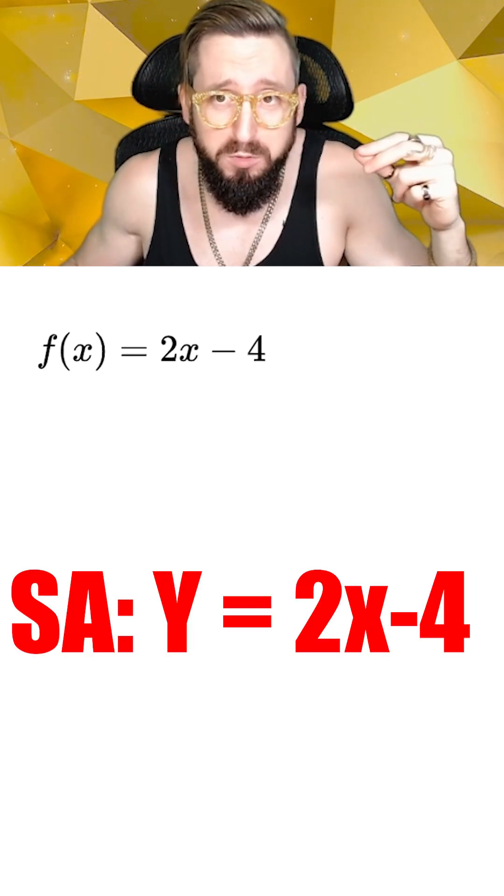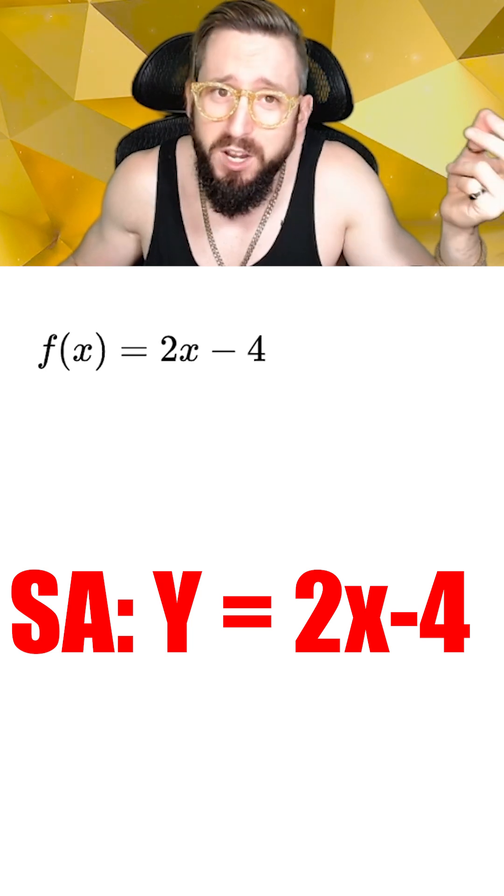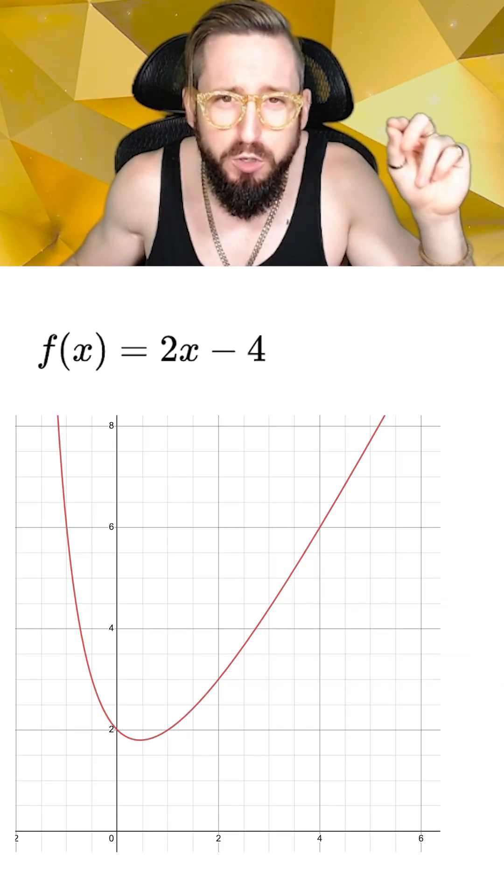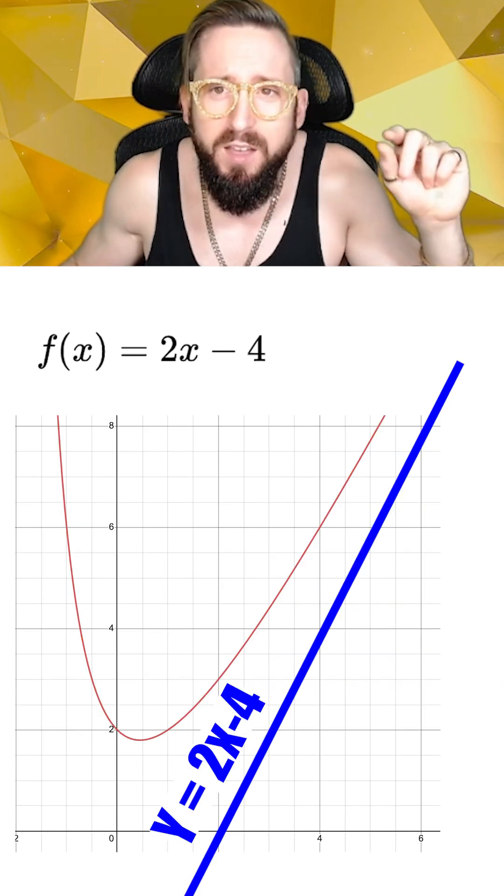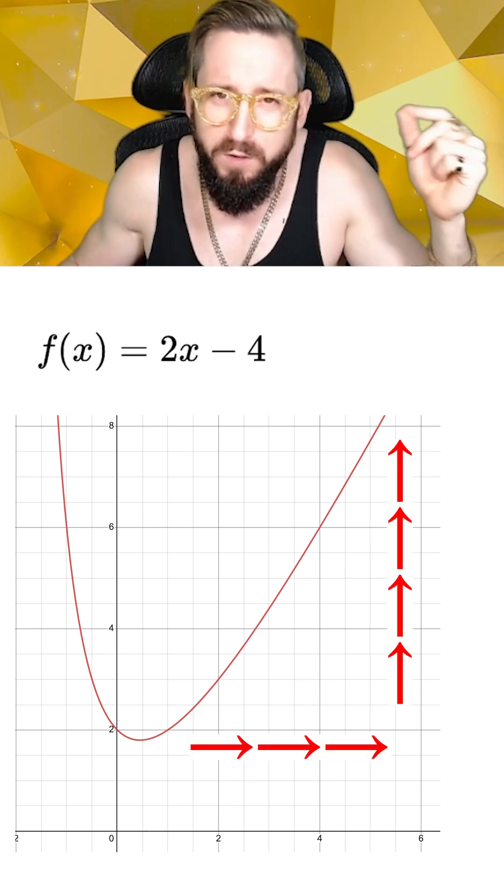So now we can say that there is a slant asymptote at y equals 2x minus 4, and you're done. Keep in mind that even though the function reduces asymptotically to a slanted line, the end behavior will still be infinite since the line goes up into infinity.